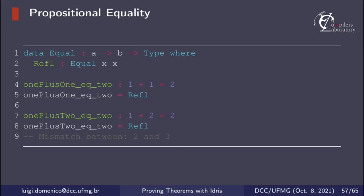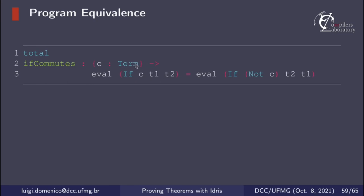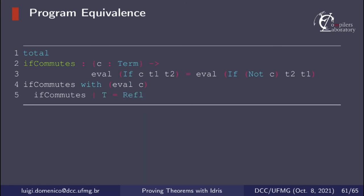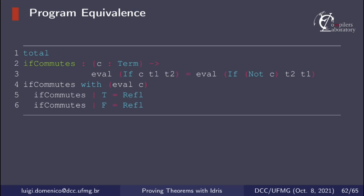This is basically how we prove our theorem using the Refl constructor. We have the function ifCommutes, where we want to prove that eval (if c t1 t2) is equal to eval (if (not c) t2 t1). Idris cannot normalize these two sides right away, so we need to break into two cases: when c evaluates to true and when c evaluates to false. We essentially use c in our proof — the first case when eval c is true, and the second case when eval c is false. That's pretty much it for this proof.